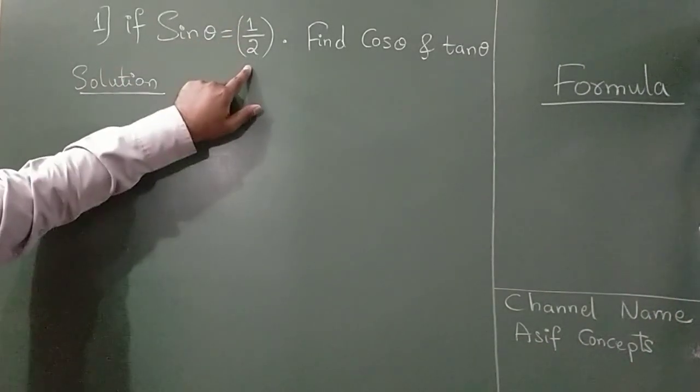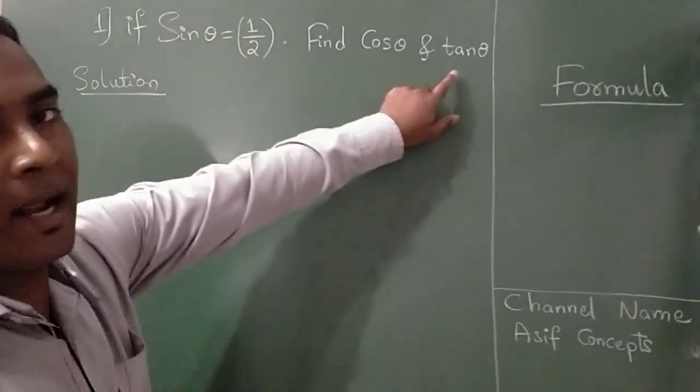If sin theta is equal to 1 by 2, find cos theta and tan theta.